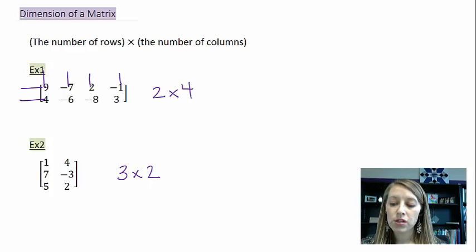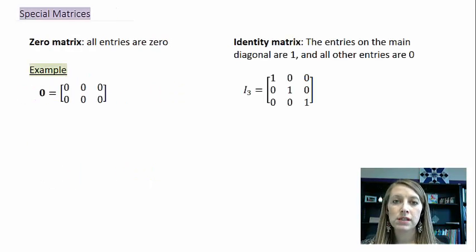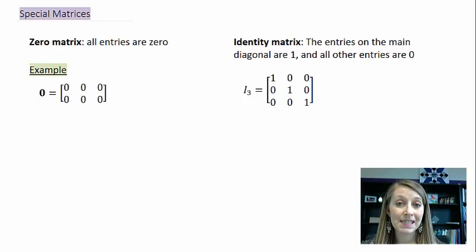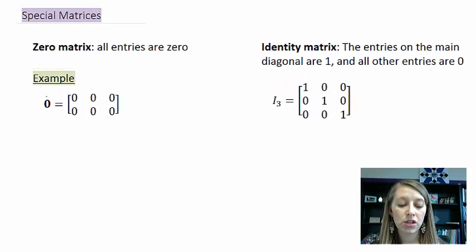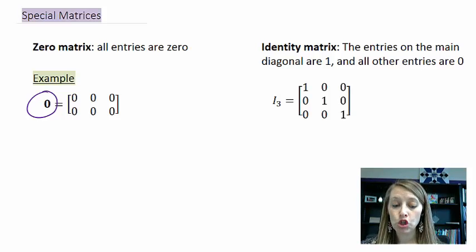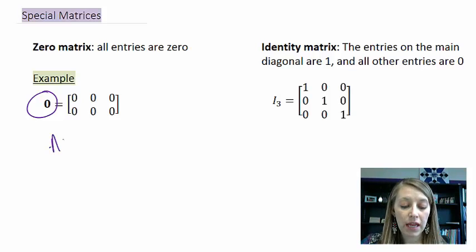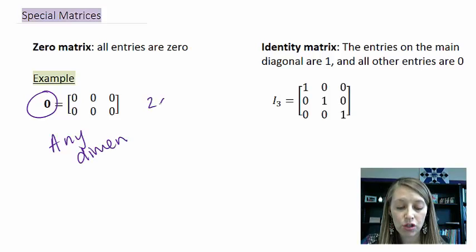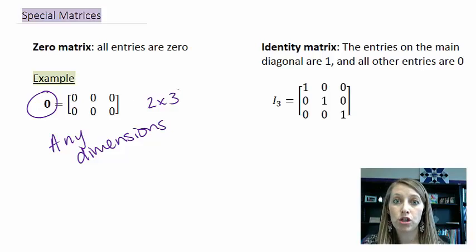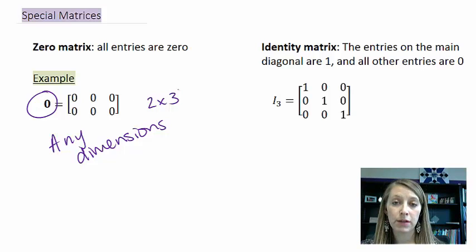We also need to learn about some special matrices. The very first one is the zero matrix, denoted by a bold zero. Every entry in that matrix is zero. These can take on any dimensions — here I have a two by three, but a zero matrix can have any dimensions whatsoever.